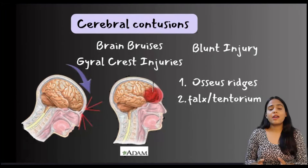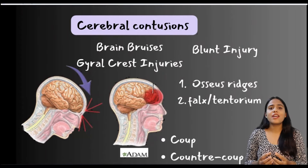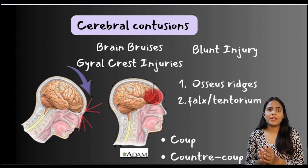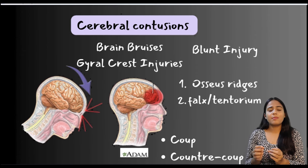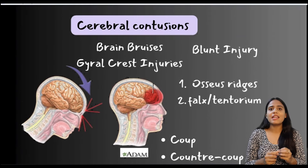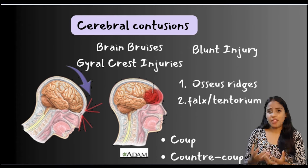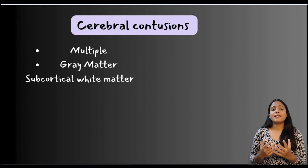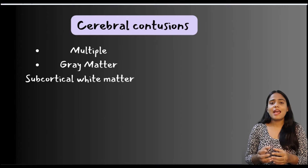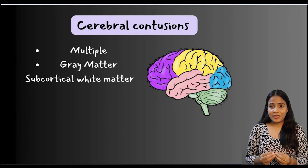What we see in this diagram is a coup injury where the intra-axial injury is at the site of direct impact. After a while, the skull is stationary but the brain tissue inside moves in a direction opposite to the initial impact, forming contra-coup injuries within the brain parenchyma. These cerebral contusions are almost always multiple and are seen in the gray matter and the adjacent subcortical white matter.